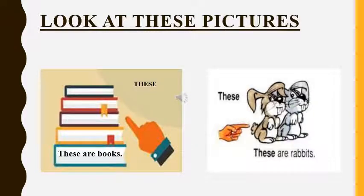Look at these pictures. In the first picture, someone is pointing towards some books. These books are near to the person, but are more in number — that is, the books are more than one and in plural form. So we use the word 'these' here. We can say, these are books. Similarly, in the second picture, the rabbits are near to the person but are in plural form, that is, more than one. So the person will say, these are rabbits.